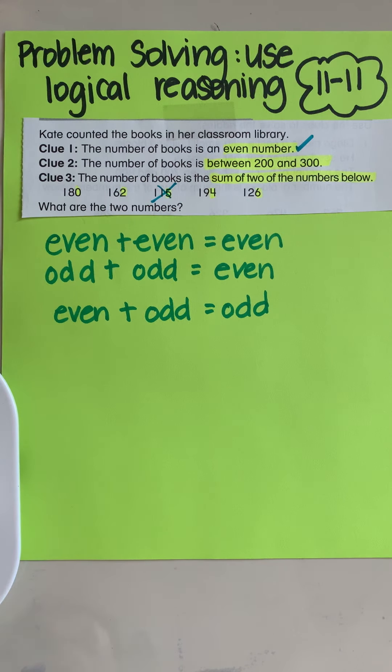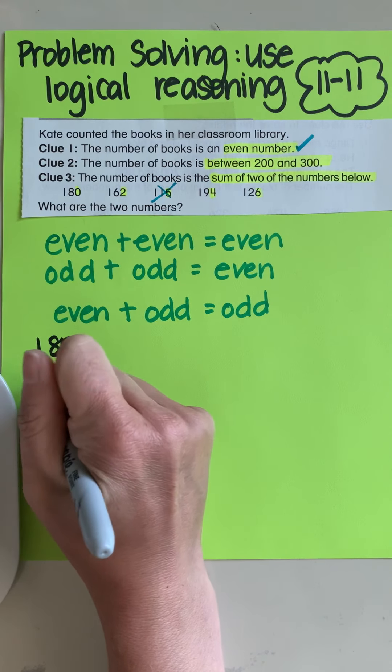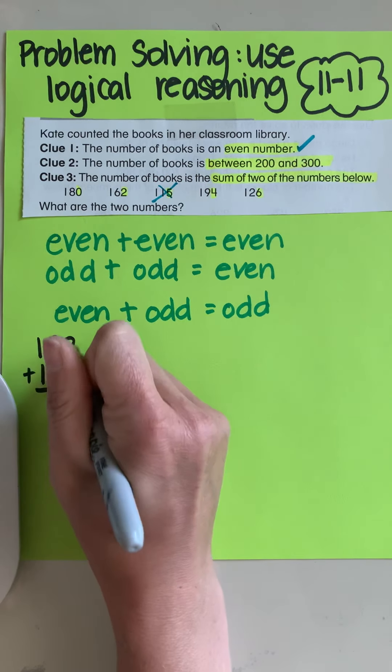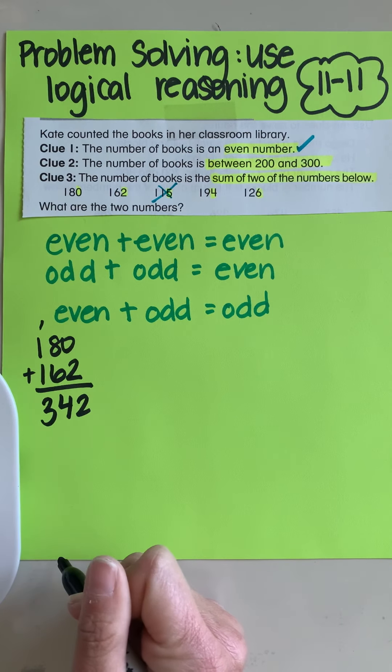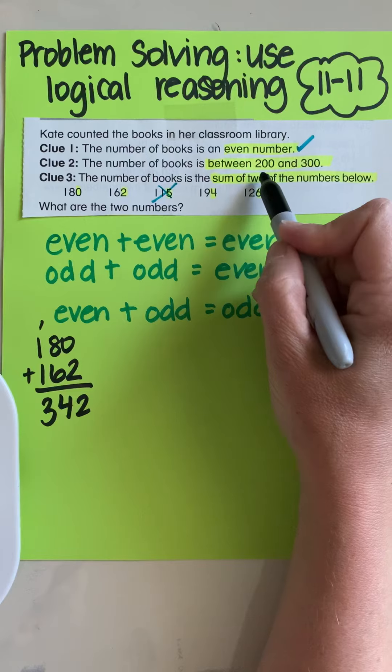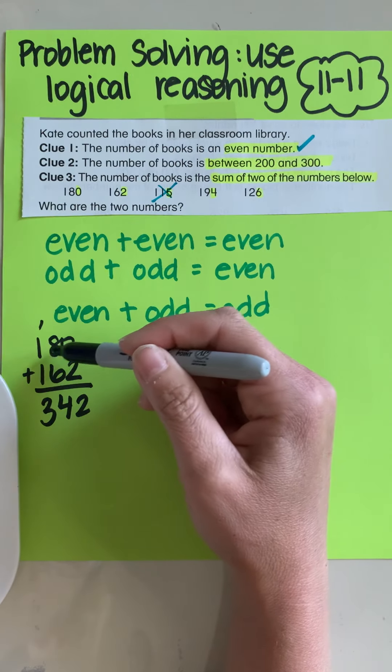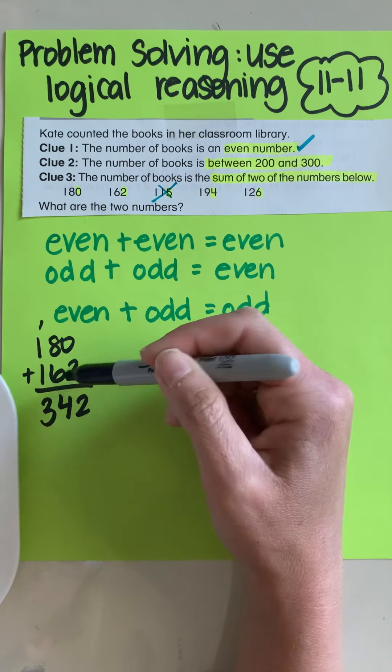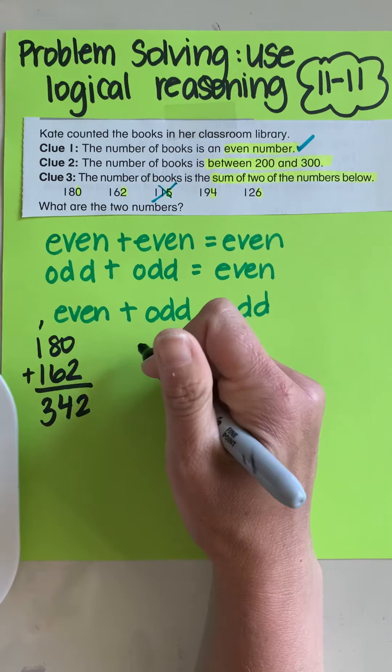So now I'm going to break it down. Let's use my black marker. Between 200 and 300. So 180 plus 162, 342. That is above 300. So I know that cannot work. And if you were estimating, you probably could say 180 plus 160 is 340. You would have already known that. Let's move on.